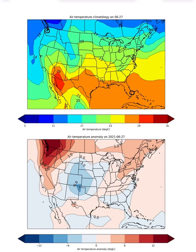The two graphs we have here are: on the top, the average climatological surface temperature on June 27th — we've averaged this over a long time period and said this is the temperature we would expect to see over many, many June 27ths. On the bottom, we have the anomaly actually observed on June 27th, 2021. The observed air temperature is just the sum of the climatological temperature — meteorologists and climatologists sometimes refer to this as 'climo' — plus our anomaly, sometimes abbreviated 'anom'.